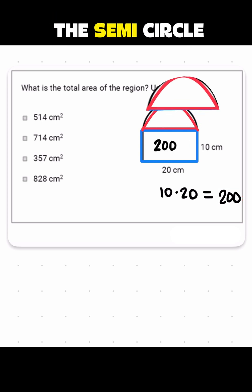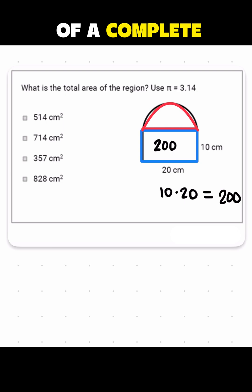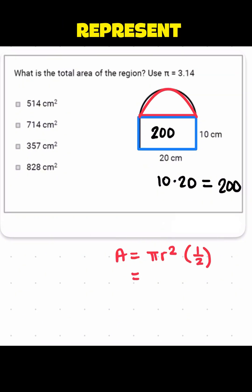Now let's take the area of the semicircle. First of all, the area of a complete circle would be pi r squared. So if I have a semicircle, I just need to take half of that. So what does pi r squared represent? First of all, the problem says to use 3.14 for pi. So I'm going to go ahead and replace pi with 3.14.